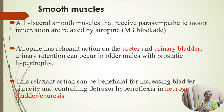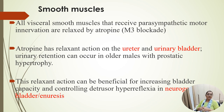Atropine has a relaxant action on the ureter as well as the urinary bladder. Urinary retention can occur in elderly male patients due to prostatic hypertrophy, so it is contraindicated in these patients. This relaxation can be beneficial in increasing bladder capacity and controlling detrusor hyperreflexia and neurogenic bladder.